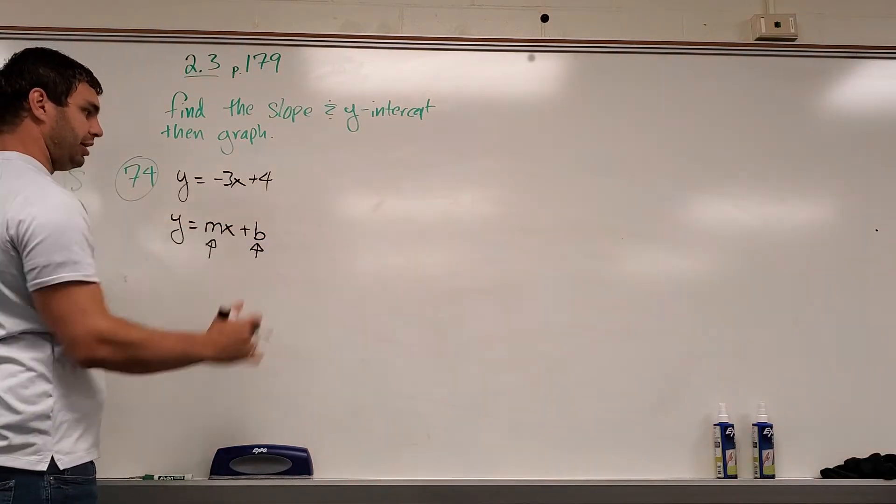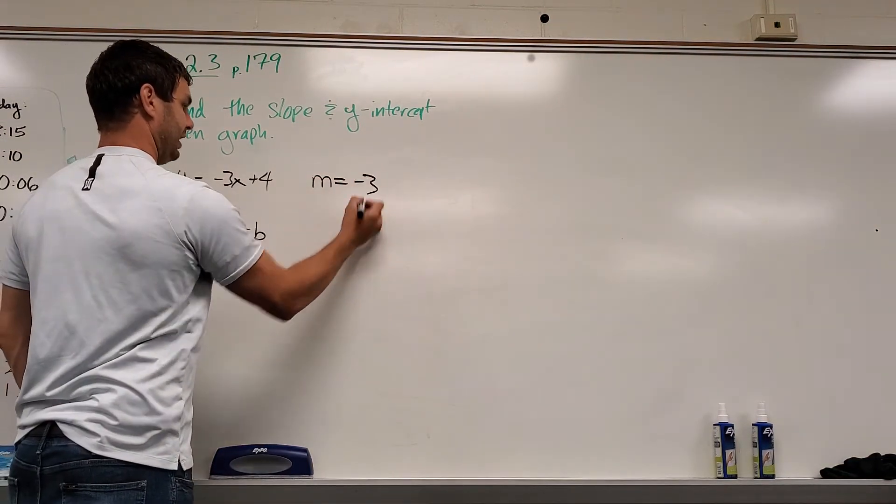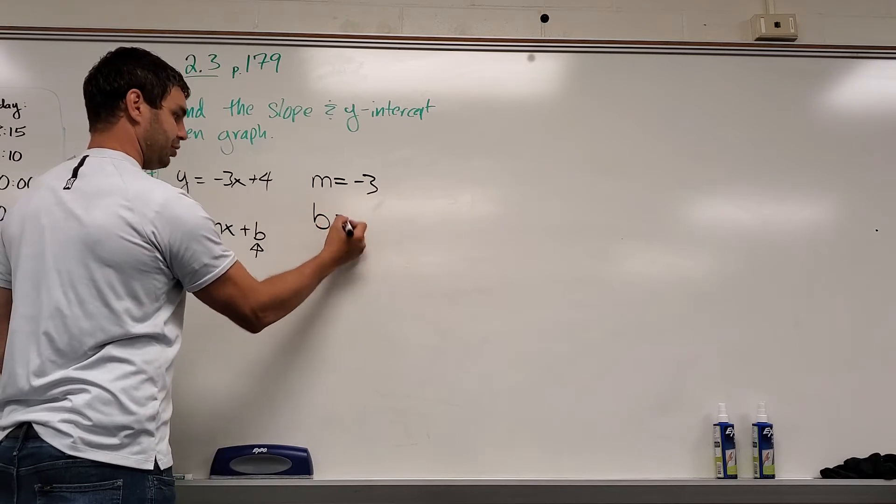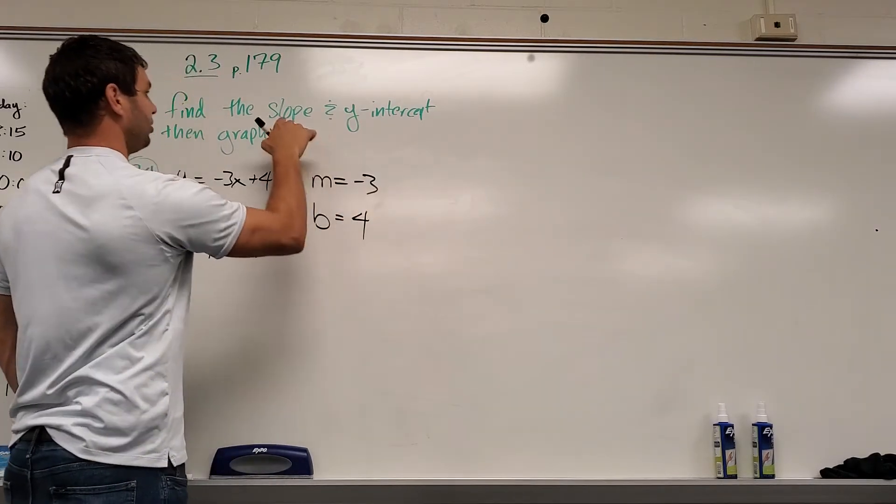So this one, since it's already written that way, we can say that our slope equals negative 3 and our y-intercept, or our b, is 4. Okay, so that part's done.